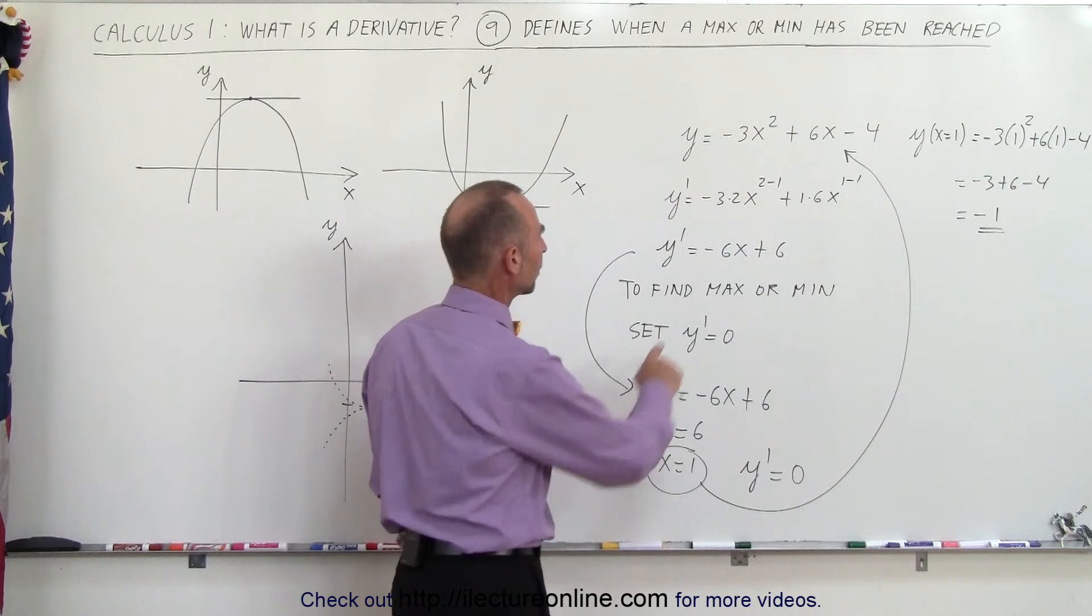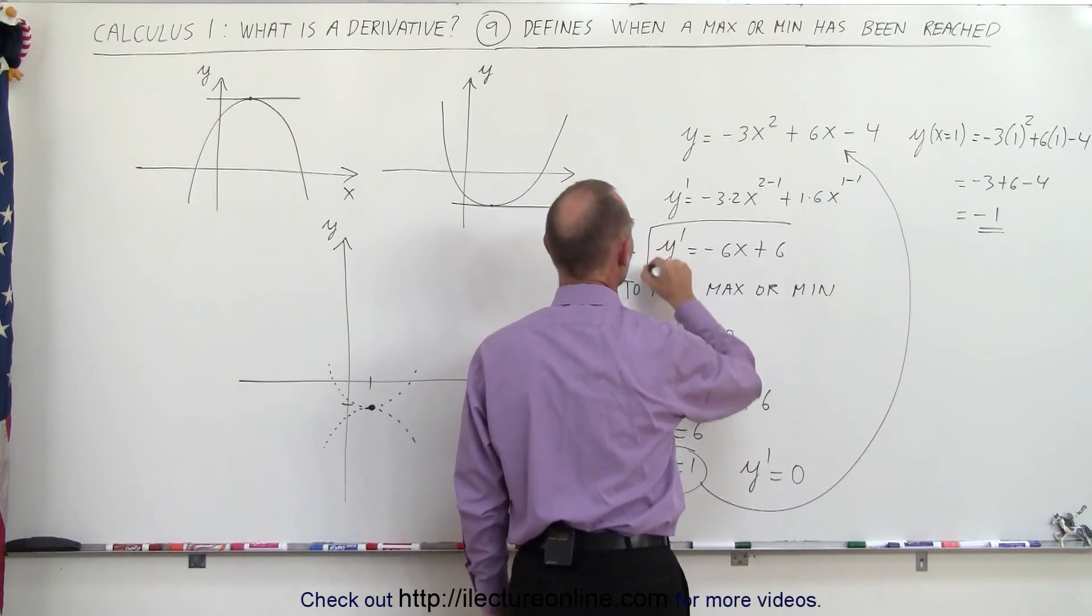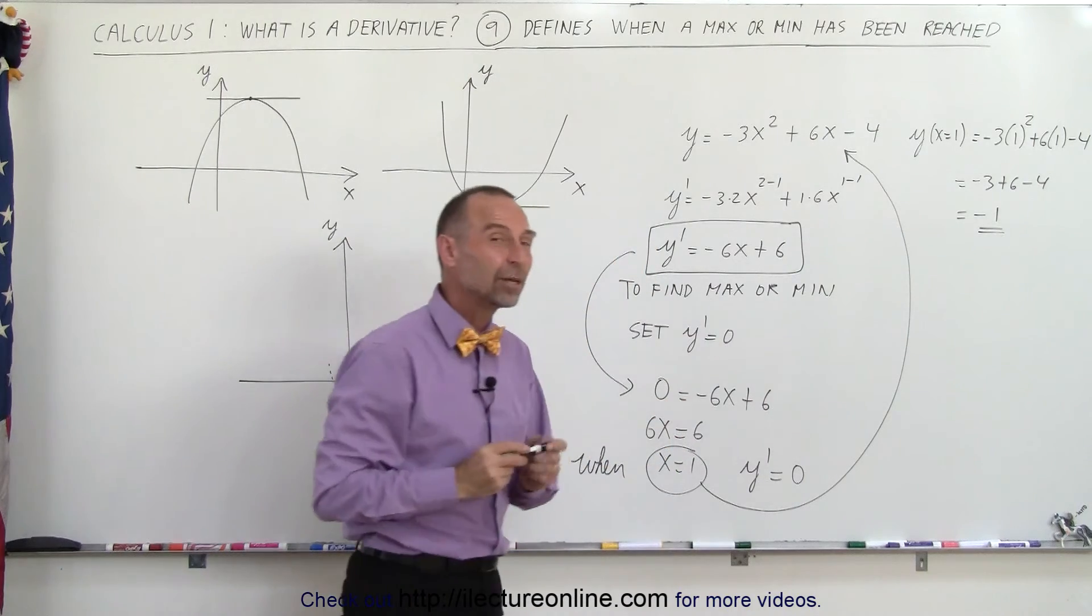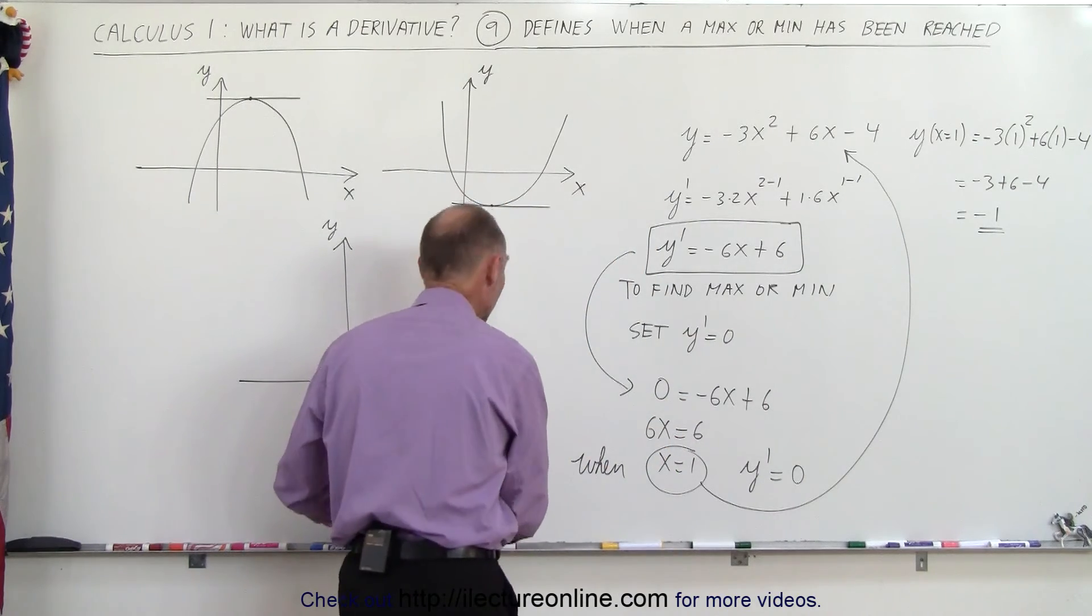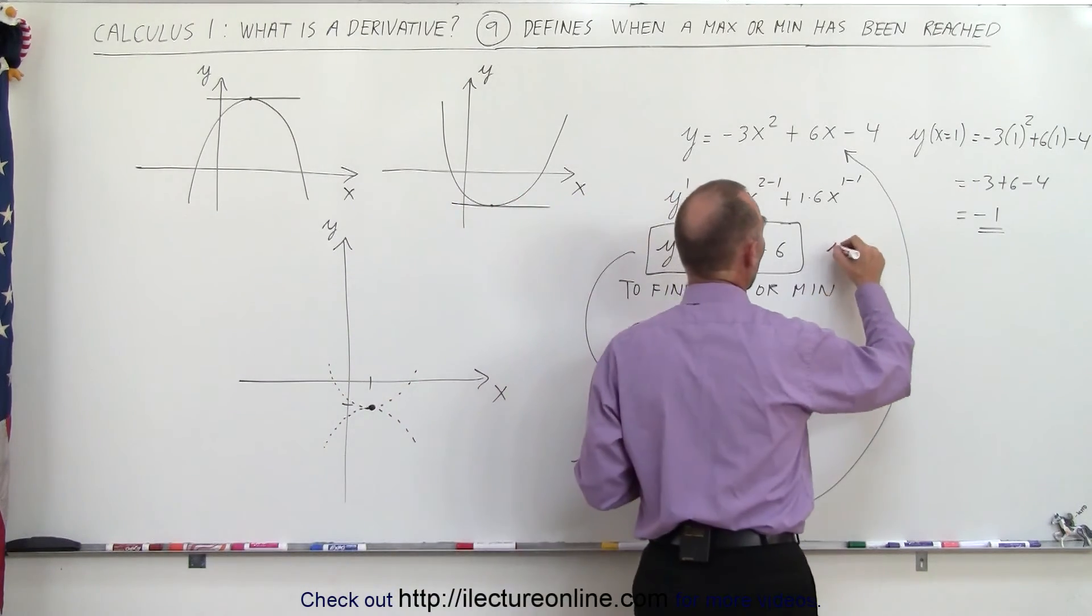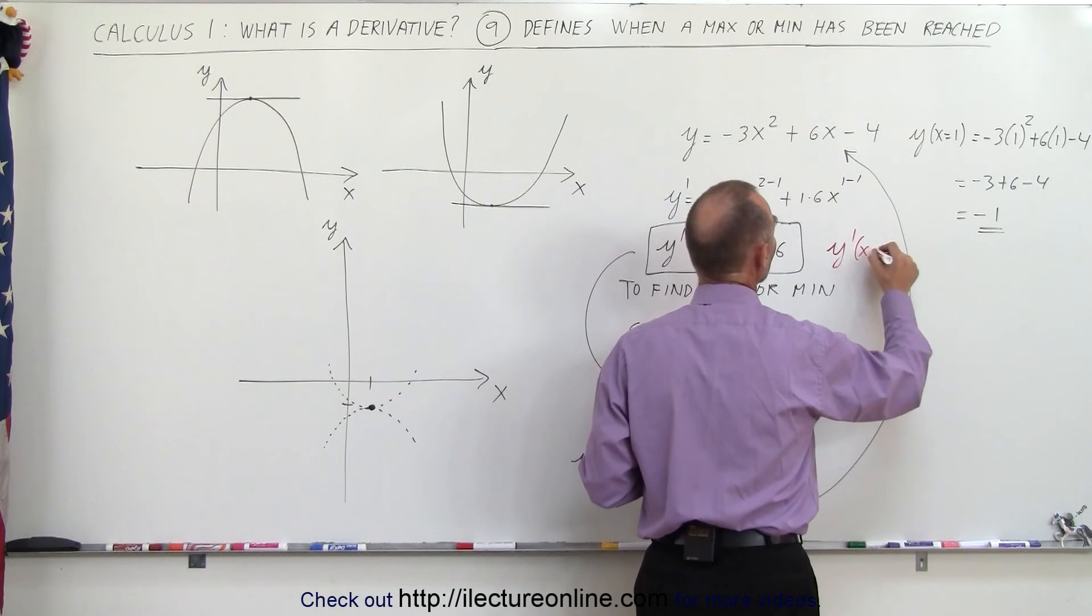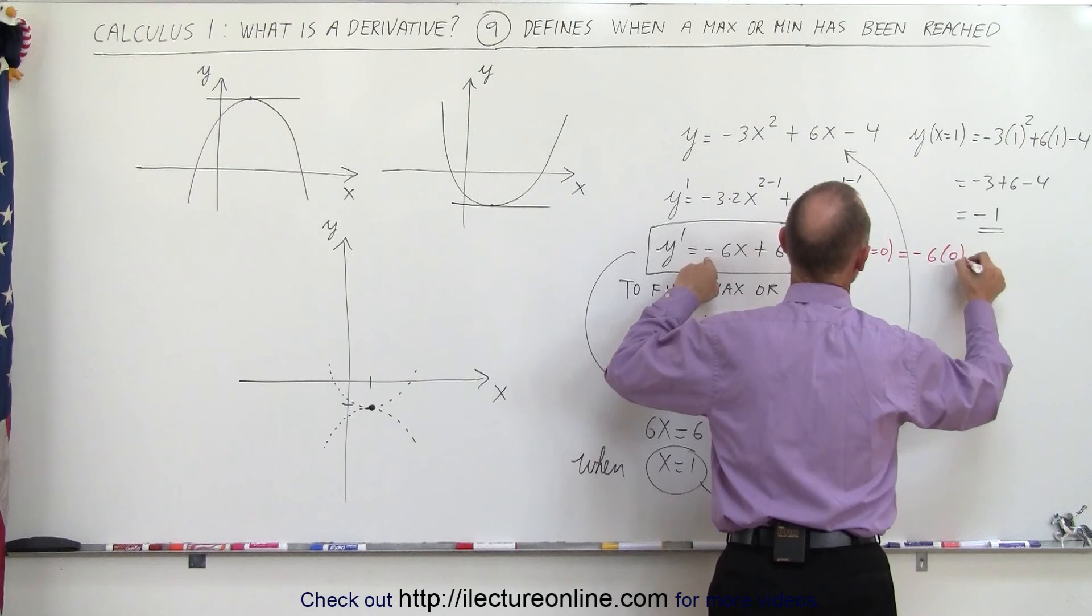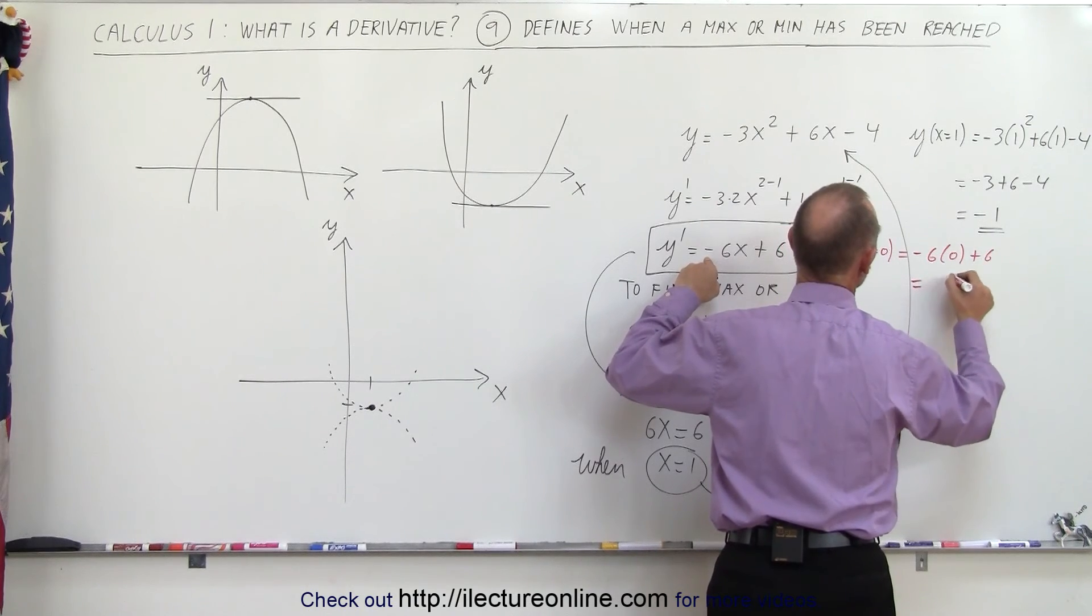So where's my derivative? My derivative is right over here. I'm now going to evaluate my derivative when x equals zero and see what we get. So y prime when x equals zero is equal to minus six times zero plus six, which is equal to six.